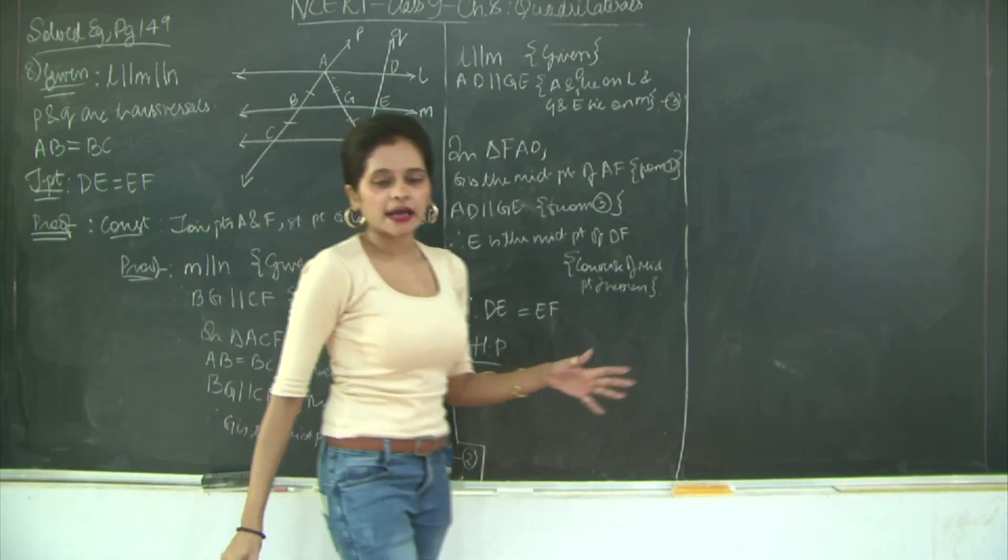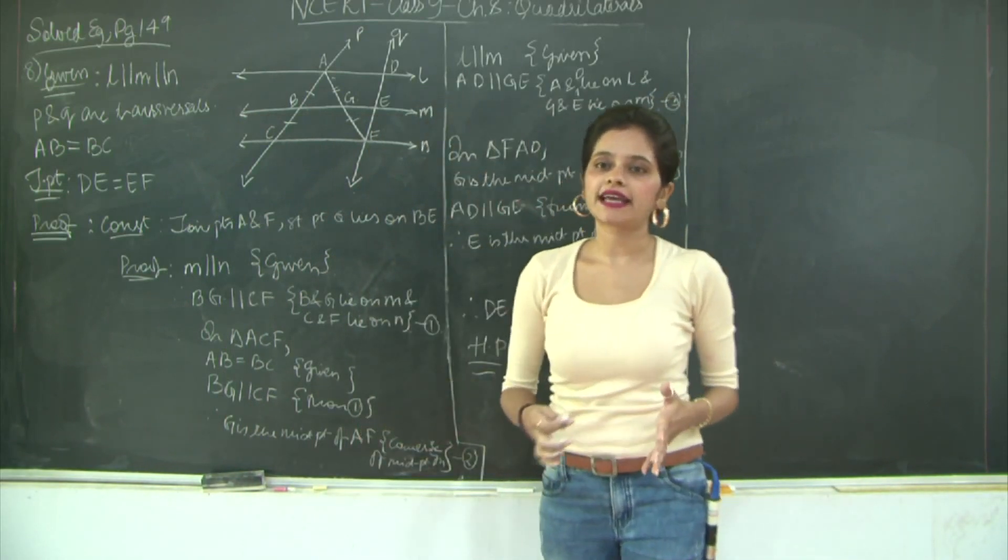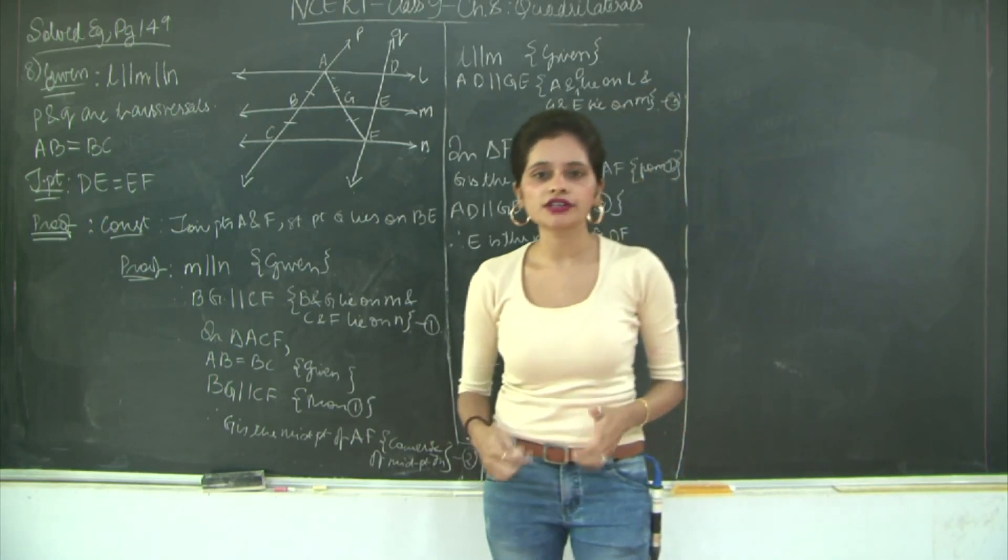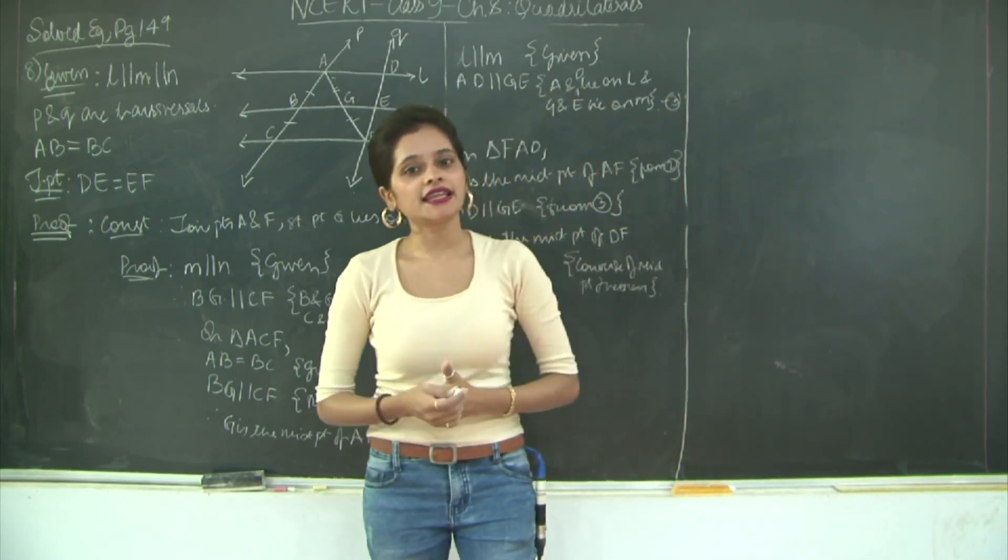So this was about solved example number 8. This is pretty simple. Now we will take a look at the exercise 8.2 related to the midpoint theorem and its converse and all that we have learnt in quadrilaterals in the next class.